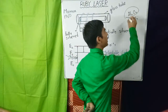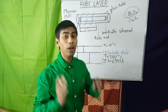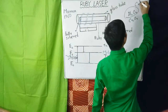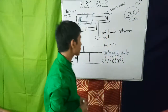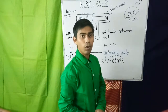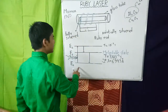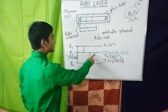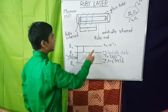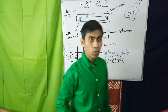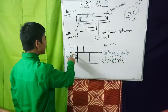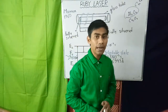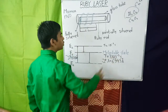Ruby is actually a crystal of aluminium oxide, and in place of some aluminium there are chromium ions, that is Cr³⁺ ions. The energy level diagram of the chromium atom is shown in this figure. This is the ground state E0, this is the first excited state E1, and this is the second excited state E2. The first excited state E1 is a metastable state having a mean life of the order of 3 × 10⁻³ seconds.